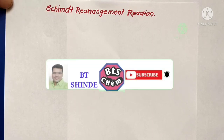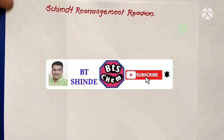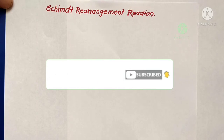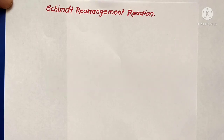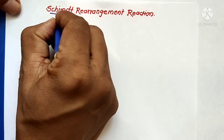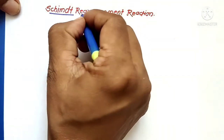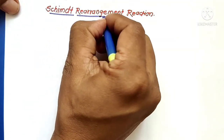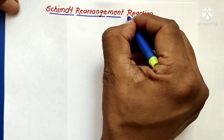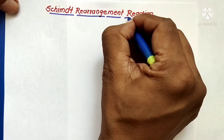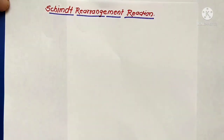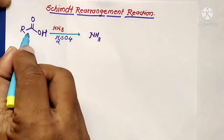Today we are going to discuss another important example of a concerted-type reaction mechanism: the Schmidt rearrangement reaction. In the Schmidt rearrangement reaction, there is formation of isocyanate as a main intermediate.